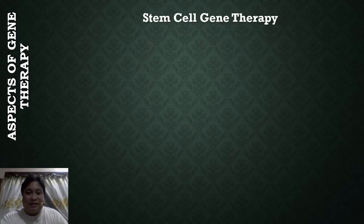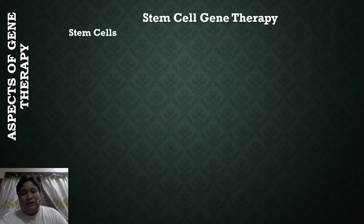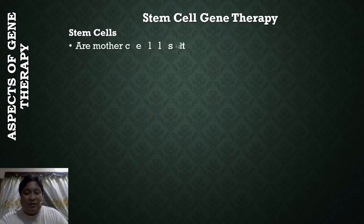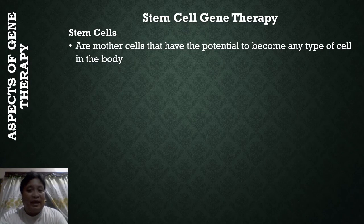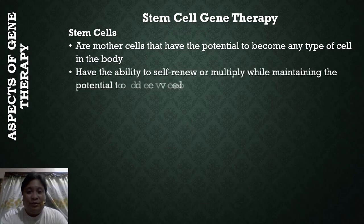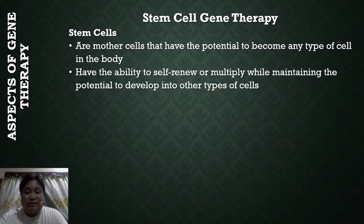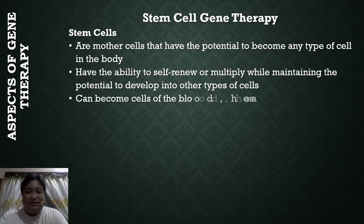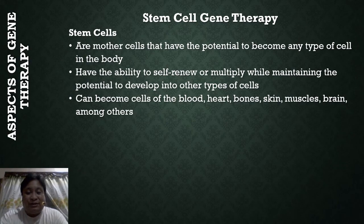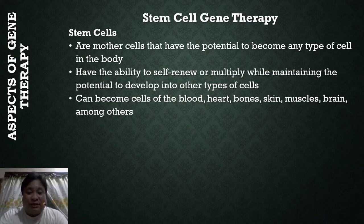Stem cell gene therapy uses stem cells, which are mother cells that have the potential to become any type of cell in the body. They have the ability to self-renew or multiply while maintaining the potential to develop into other types of cells — including cells of the blood, heart, bones, teeth, skin, muscles, and brain. They are derived from different sources, one of which is embryonic stem cells, derived from a four or five day old human embryo.